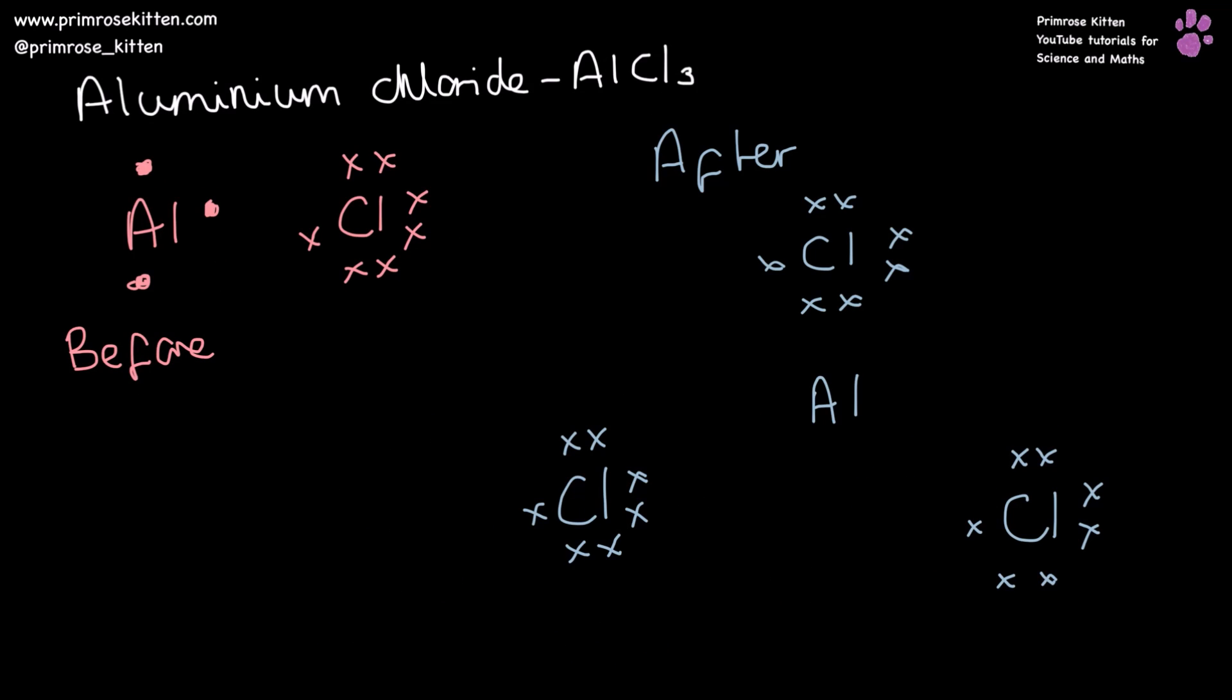Aluminium chloride now: there are three electrons on the outer shell of aluminium that it wants to get rid of, and chlorine has space for one electron. So aluminium is going to bond with three chlorines, each one of them taking one electron from the aluminium, which is going to give us aluminium with a three plus charge and three chlorines, each of them having a minus one charge.